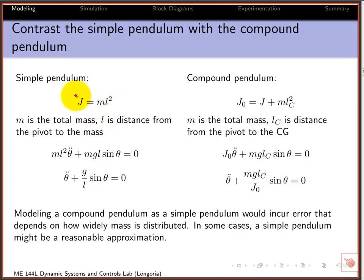Compare that to the compound pendulum case. J was ML squared, but as you found in the first lab on compound pendulum, the J about the pivot, which I'm calling J sub zero here, is J plus ML_C squared, where L_C is the distance to the center of gravity. The equations end up very similarly. You can see it's very similar to a simple pendulum. The only difference is this case is for the rigid body, the compound pendulum.